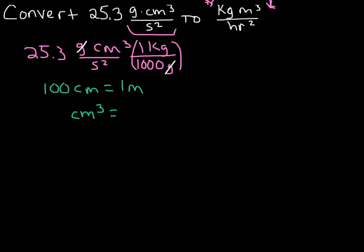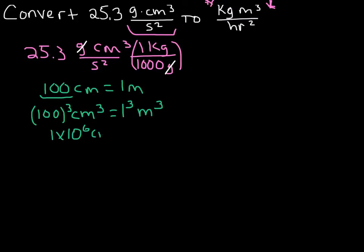We've cubed our centimeters. What we need to remember is that we need to cube this number also, and we're going to do the same thing on the other side — meters cubed, and it's going to be one cubed, which is still just one. That's why you may see a conversion factor that looks like: one times ten to the sixth centimeters cubed equals one meter cubed. Whatever you do to the unit, you have to do that to the number in front of it.